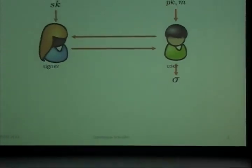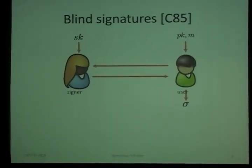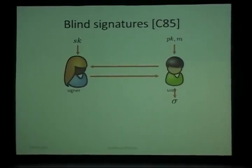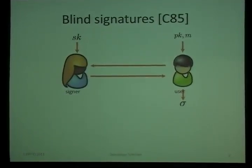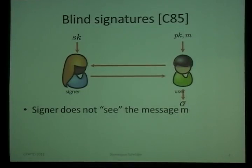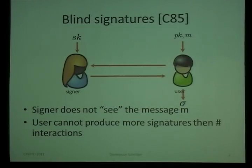Blind signatures were invented in 1985 by David Chaum. The basic idea is that we have an interactive protocol between two parties: a user who wants to get a signature, and the signer who wants to issue signatures. They are blind in the sense that the signer does not see what he's signing. On the other hand, the signer wants some kind of security, called unforgeability — it roughly says that the user cannot produce more signatures than the number of interactions.